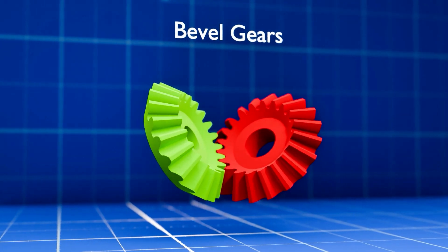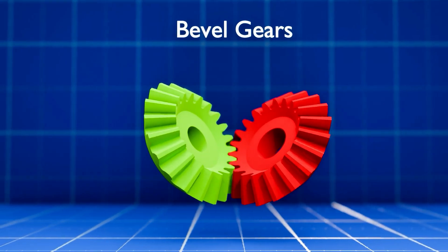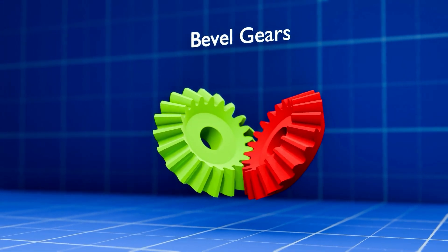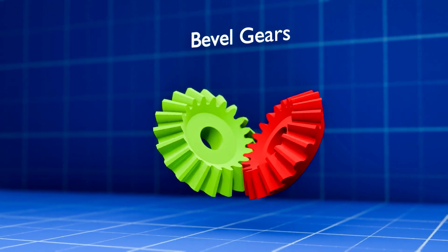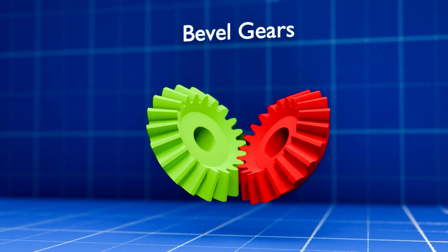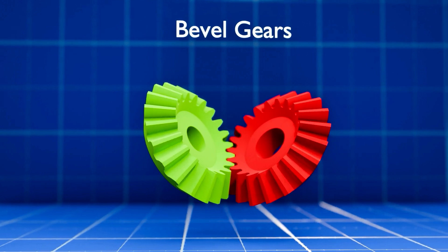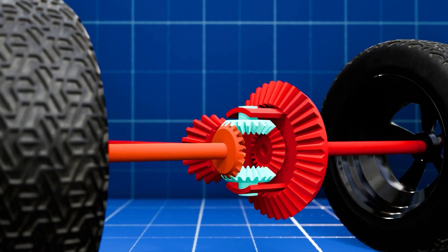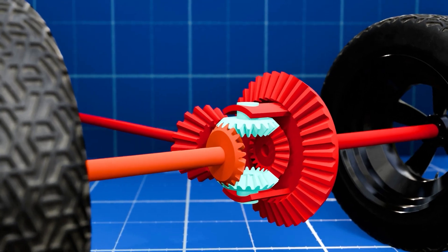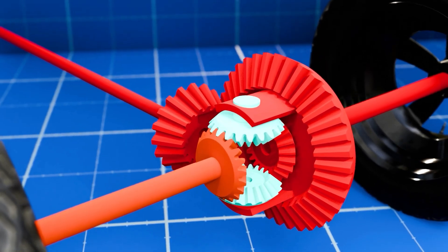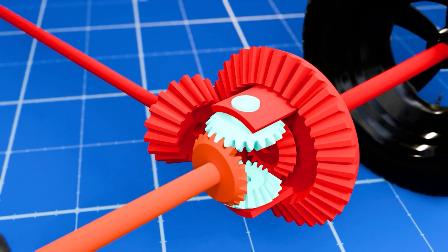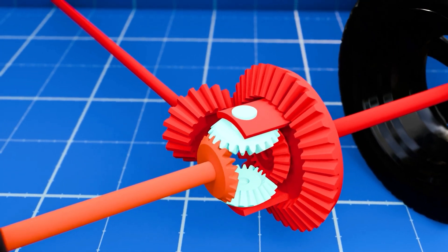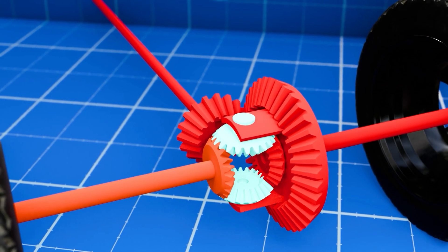When you need to transmit motion between shafts that are not parallel, bevel gears are often used. These gears are cone-shaped with teeth on the cone surface. They can connect shafts lying at any given angle, though they are most commonly used for shafts at 90 degrees. A common use for bevel gears is in a car's differential system, where they take power from the engine and transfer it to the car wheels. The differential mechanism allows the tires to rotate at different speeds, which is useful when a car is going around a corner.